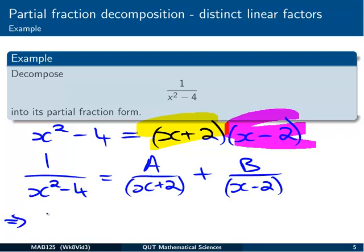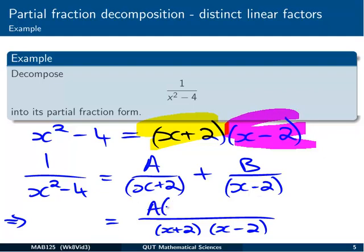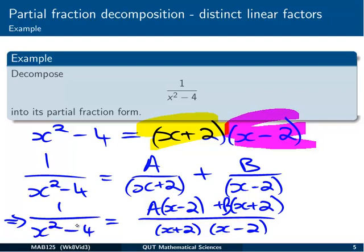And the next step is on the right hand side we're going to combine these back together again over a single denominator. And of course it's going to be (x+2)(x-2), which is exactly the same as x²-4 anyway. And then we've got A, we need to multiply that by (x-2), and B we need to multiply by (x+2) so that we can have the common denominator. And that's all going to be equal to 1/(x²-4).